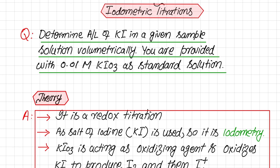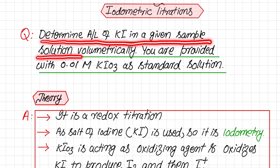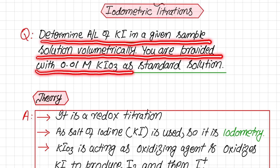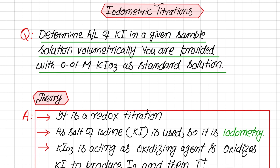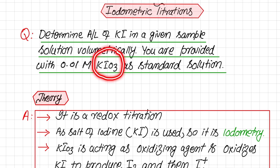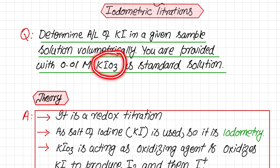This titration involves iodine in terms of its salt. The question statement of this practical is to determine the amount per liter of potassium iodide in a given sample solution volumetrically. We are provided with 0.01 molar potassium iodate as the standard solution. The analyte is potassium iodide, and potassium iodate, whose concentration we know, is taken in the burette.